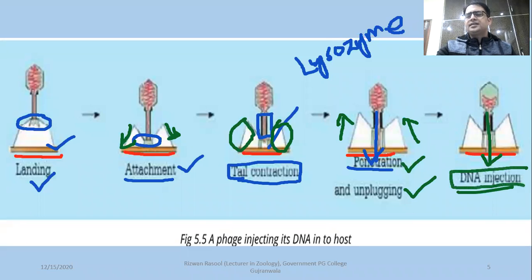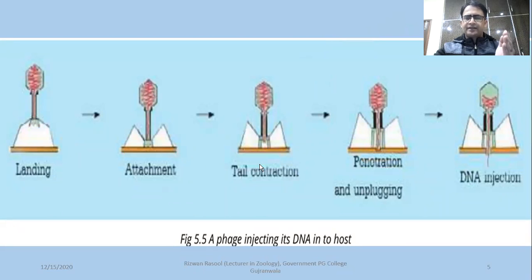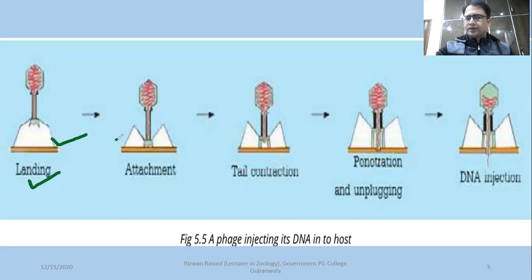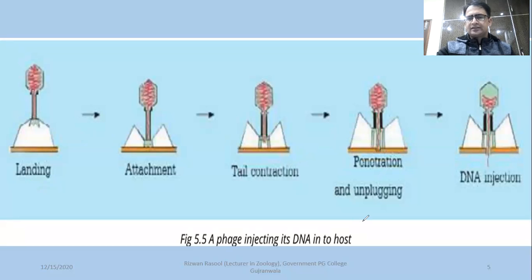After DNA injection, the bacteriophage virus has delivered its genetic material. To summarize the steps: first is landing, where tail fibers attach; second is attachment, where the base plate is attached; then the tail contracts — the sheath proteins contract — causing penetration of the core protein; then unplugging begins, meaning detachment of the tail. Finally, the DNA is injected into the bacterial cell. You should follow the sequence given in your textbook.